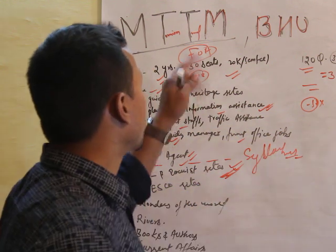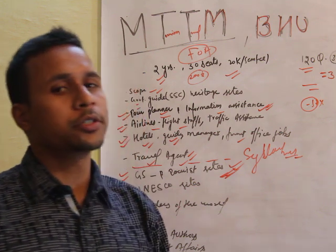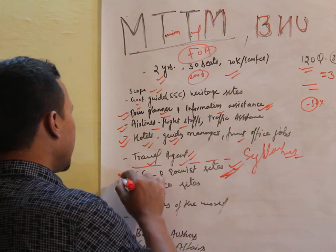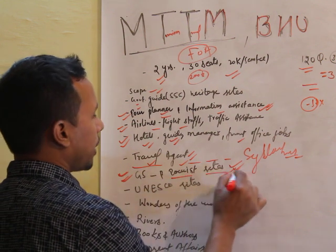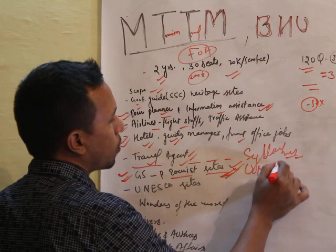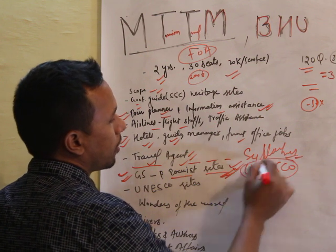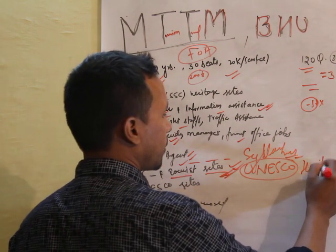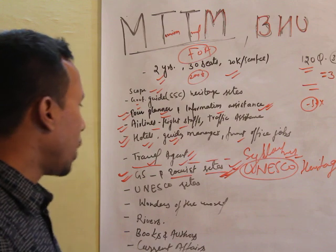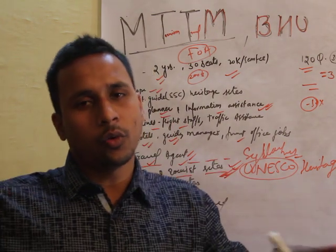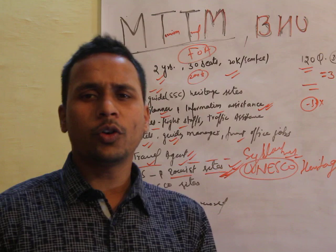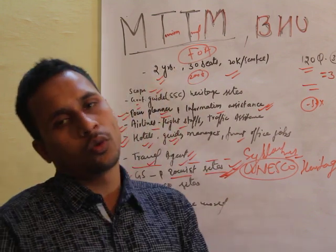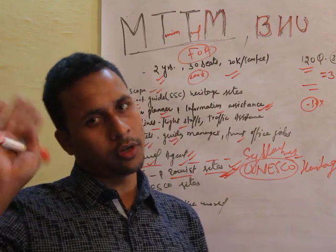The Master in Tourism and Travel Management BHU syllabus is all about general studies related to tourist sites included in UNESCO heritage. You have to study all UNESCO heritage sites in the whole country in depth — you must know in which year each site was included in UNESCO and who built it.